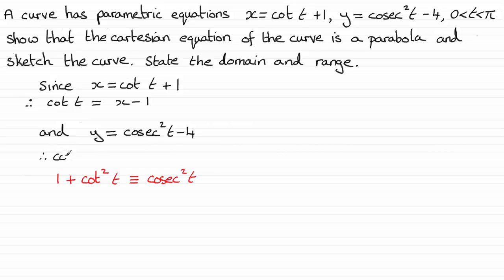So cosec squared t is equal to y plus 4. And because we've got this identity here, I'll just put since 1 plus cot squared t is identical to cosec squared t, we just substitute these into our identity.